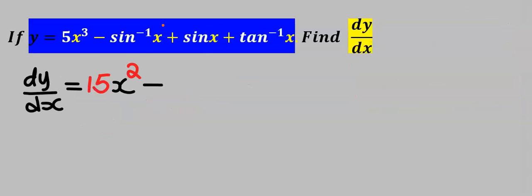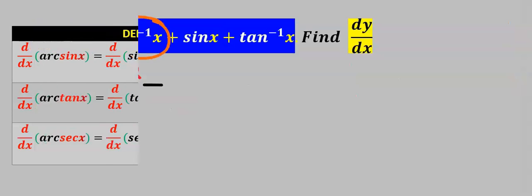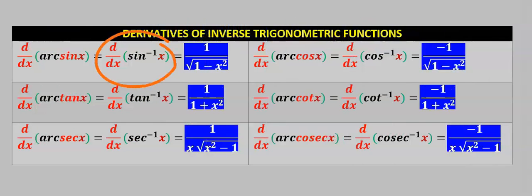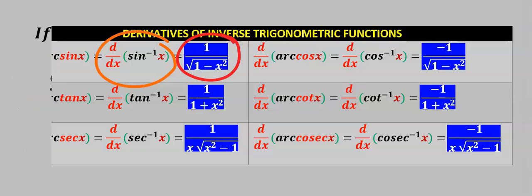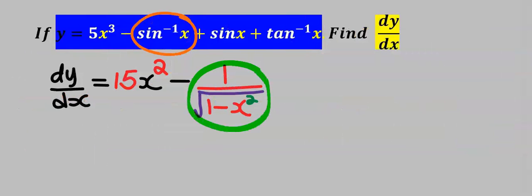Next, let's differentiate the sine inverse of x. When you differentiate sine inverse of x, you get 1 divided by the square root of 1 minus x squared. Hence, we have this as the derivative.